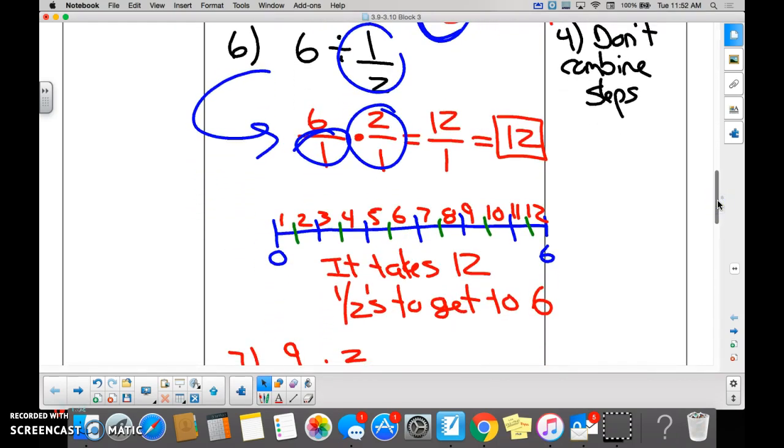And then number six, we just talked about this. How many one-halves go into six? Twelve. And we counted them, right? This is one-half. This is another one-half. That's our second one. Our third one-half, our fourth one-half, and so on. And we counted twelve one-halves that went into six. You guys know? Yes.